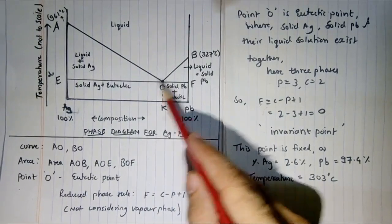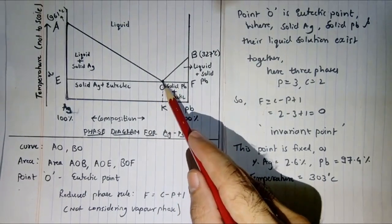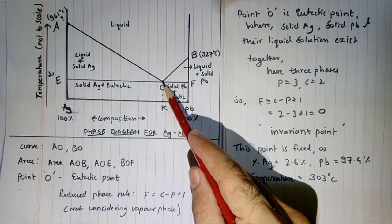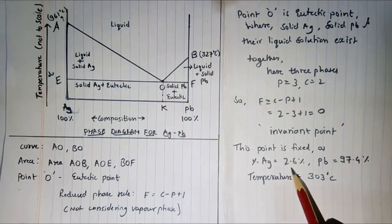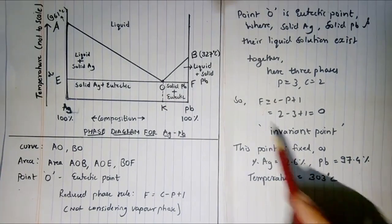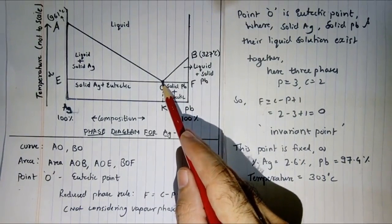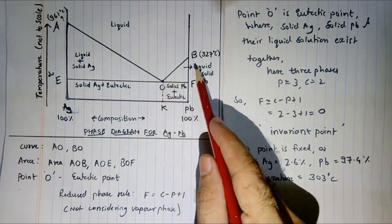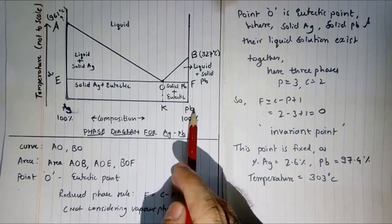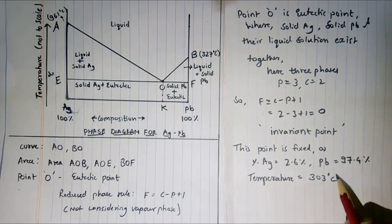If you change the composition, the system will shift to either the silver side or the lead side. That is why it is an invariant system — you cannot change anything here. The composition is fixed: silver is 2.6% and lead is 97.4%. This is the eutectic point — the lowest melting point attained by the mixture of silver and lead — and the temperature is 303°C. Everything at this point is fixed.